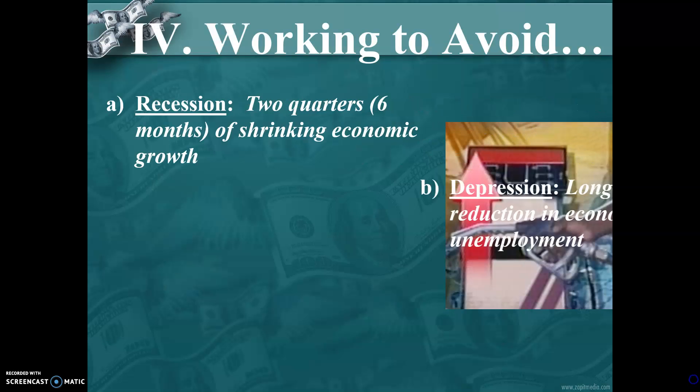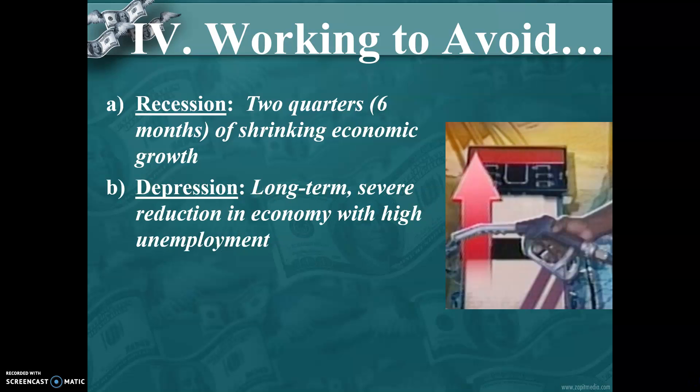Government is always worried about four big nasties. A recession — we saw the Great Recession during Obama's first term — is two quarters, about six months, of shrinking economic growth; the economy shrunk. A depression, like the Great Depression, is a lot worse — it's more than six months, a long-term, years-long severe reduction in the economy. During the Great Recession, we saw unemployment as high as 15% in Nevada. During the Great Depression, unemployment was around 25% nationally and economic output dropped by 50%.